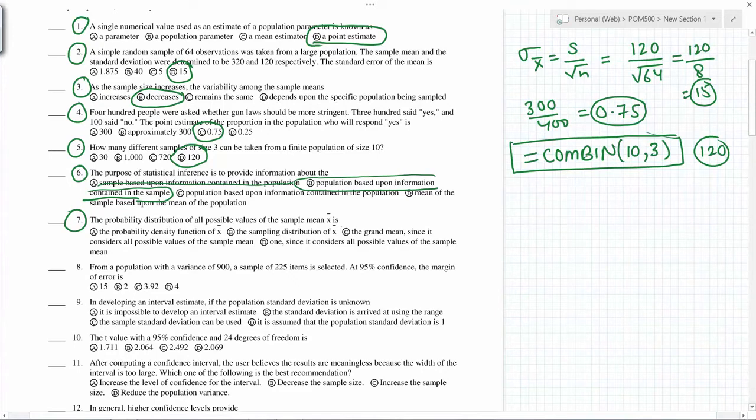The probability distribution of all possible values of the sample mean X bar - the name we give is the sampling distribution of X bar. For a population with variance of 900, variance means sigma squared equals 900, so calculate sigma by taking the square root, we get 30. Sample of 225 - that's the sample size.